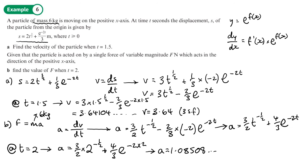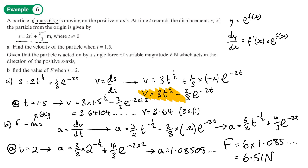Now we can find the force: F = 6 × 1.085 = 6.51 newtons to three significant figures. Part a was the velocity of 3.64 m/s, and part b gives a force of 6.51 N. You should now be able to do exercise 8c on pages 168 to 170 of the textbook.